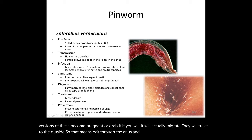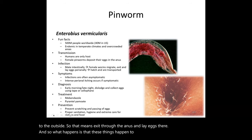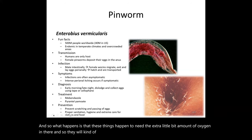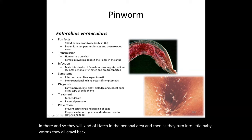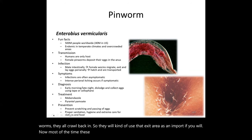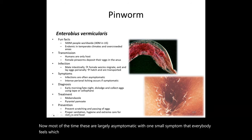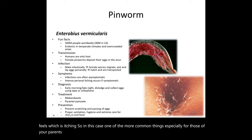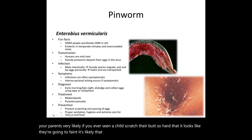What normally happens is they mate inside your intestines, and once the female becomes gravid, she migrates and exits through the anus to lay eggs in the perianal area. Those eggs need a little extra oxygen, so they hatch there, and the baby worms then crawl back in — using that exit as an entrance. Most of the time this is largely asymptomatic, with one very common small symptom: itching.